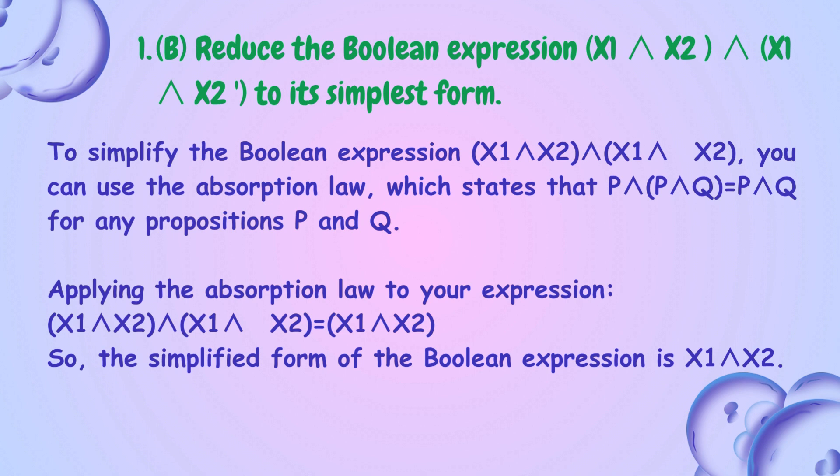The next question is to reduce the given boolean expression to its simplest form. To simplify the boolean expression, you can use the absorption law, which states that P AND (P AND Q) equals P AND Q for any propositions P and Q. Applying the absorption law, the simplified form of the boolean expression is X1 AND X2.